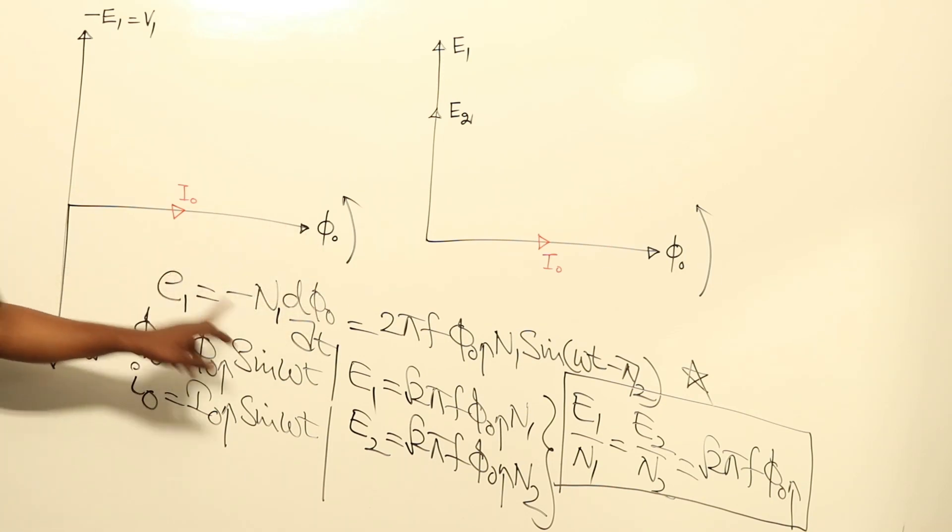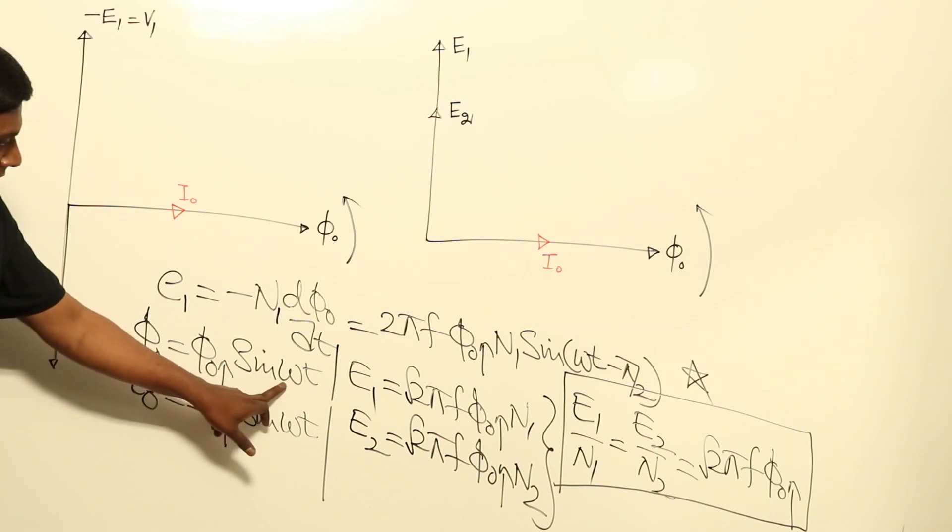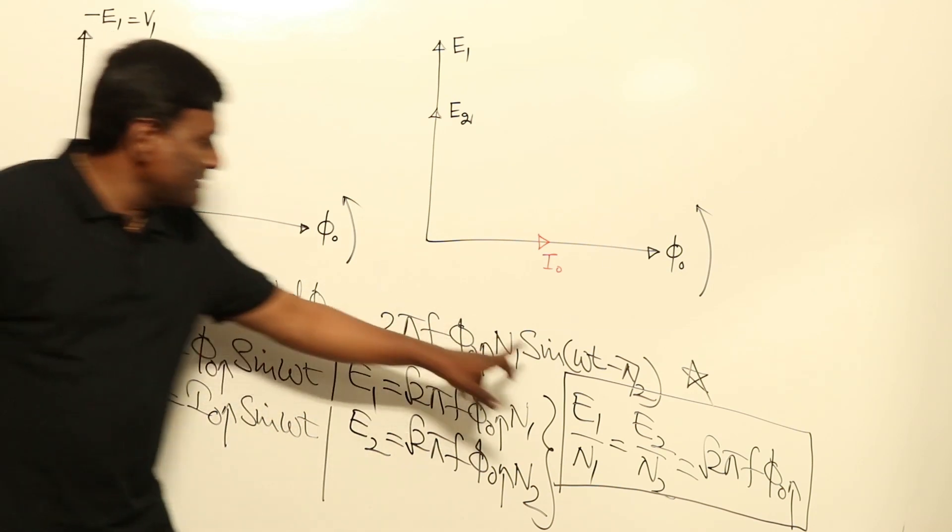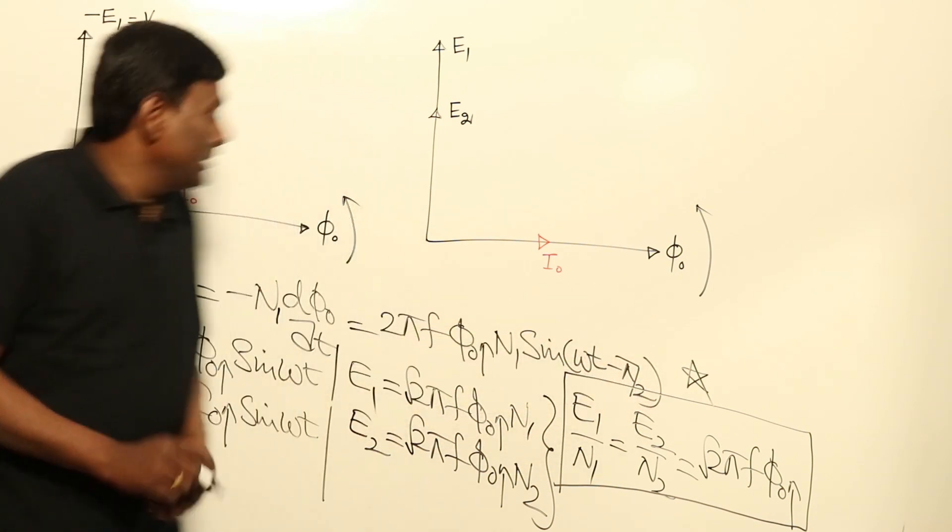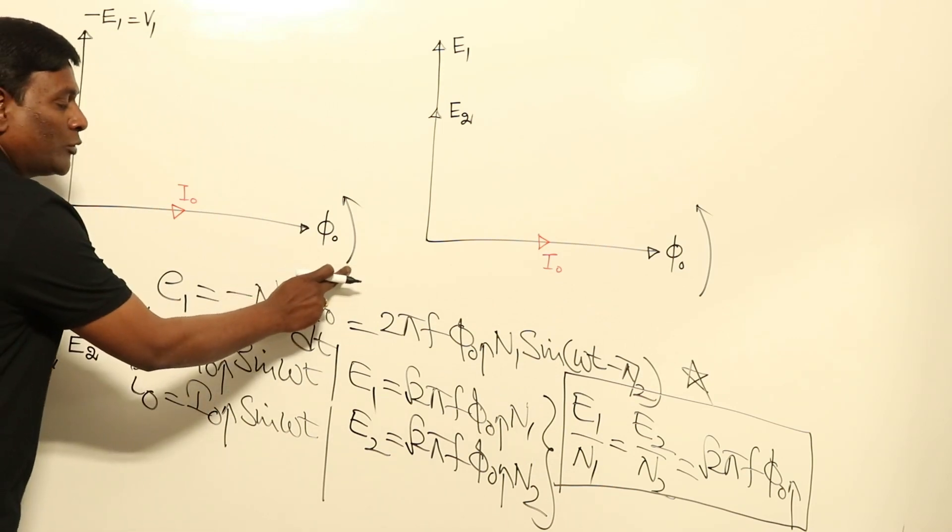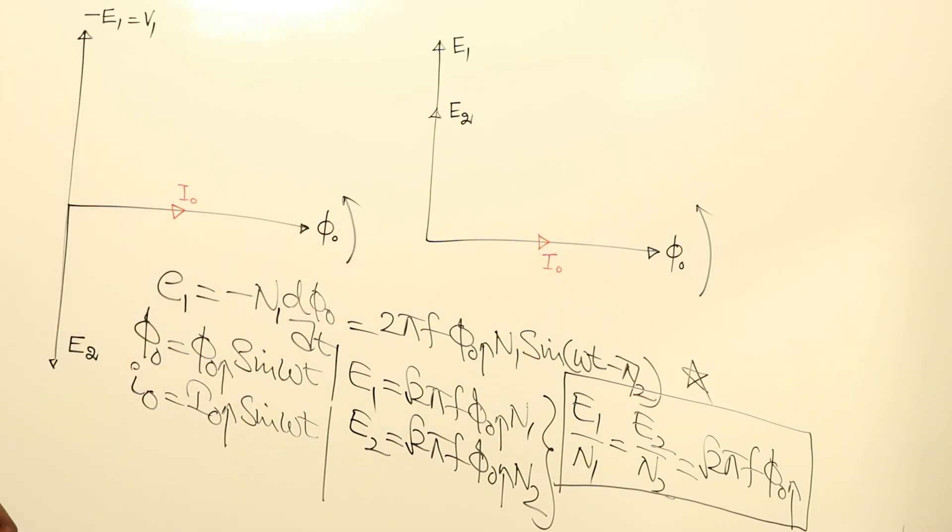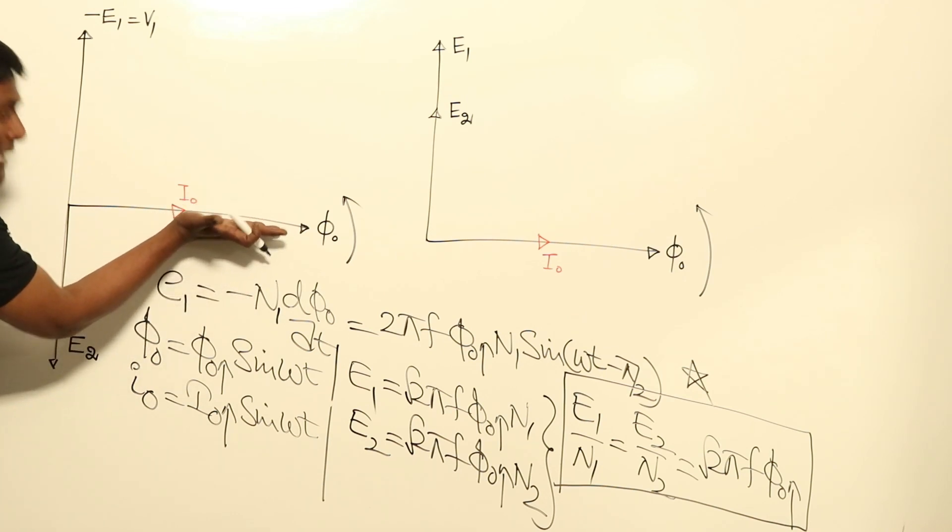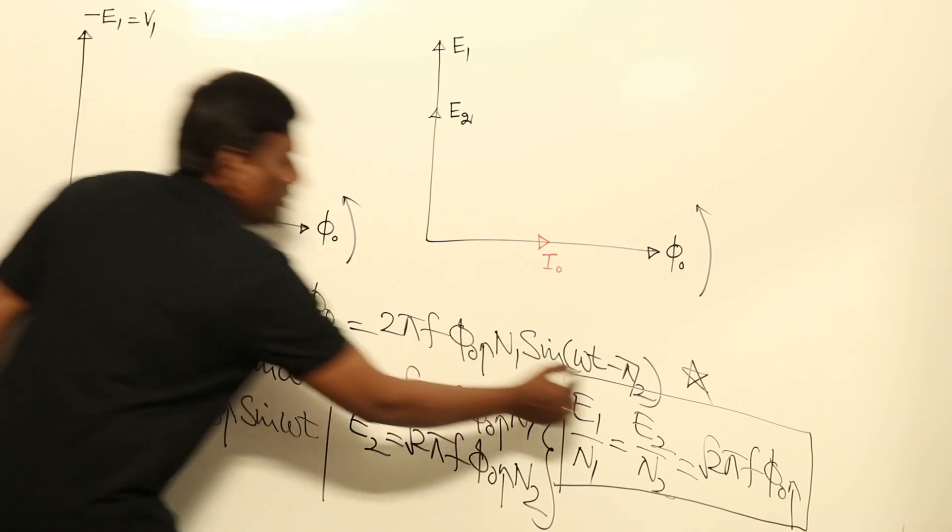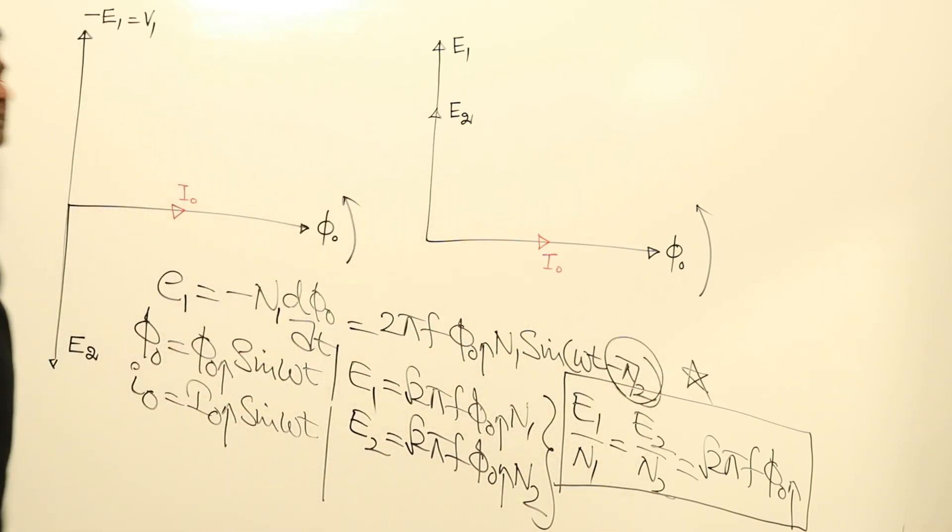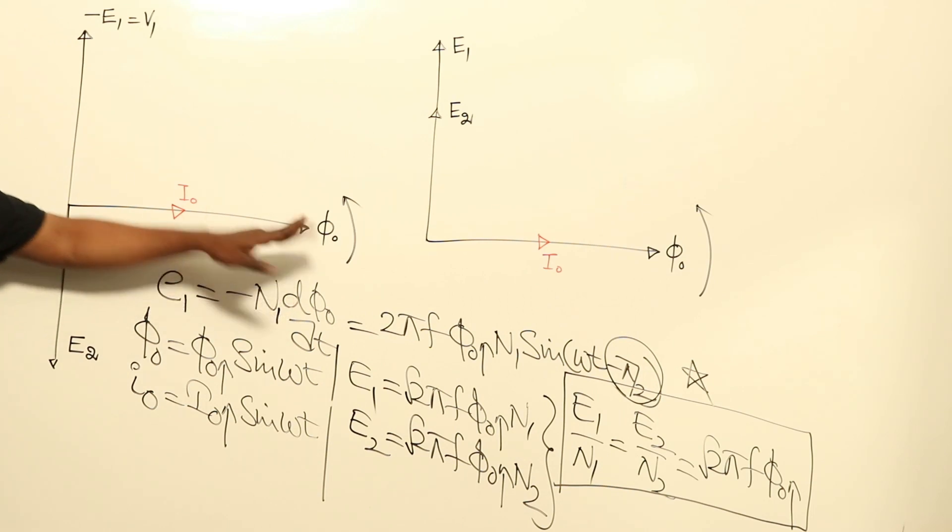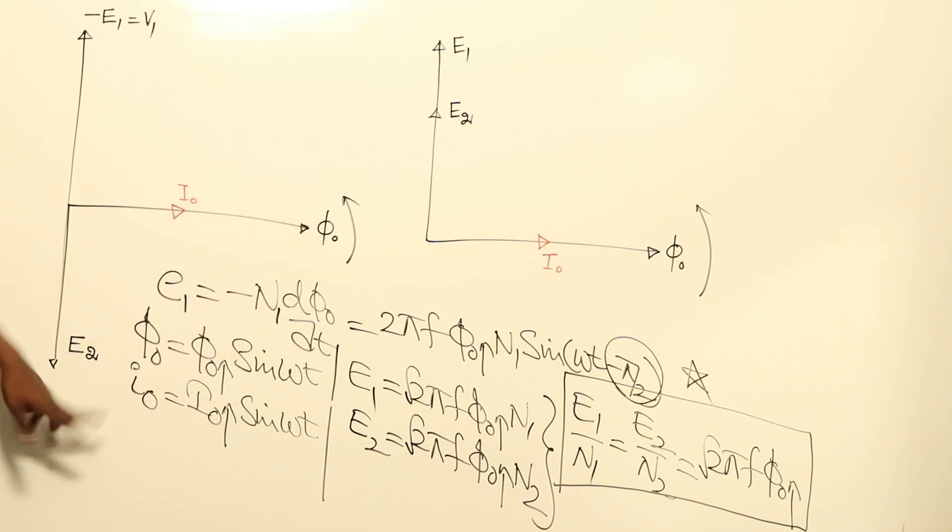My induced voltage is going to be, if Φ0 is sin ωt, E1 is going to be sin(ωt - π/2). That means if phasor order of rotation is in anticlockwise direction, Φ0 and I0 are in line. So if you go in the same anticlockwise direction, it will become plus π/2. If you go in opposite direction, I0 and Φ0 are here, so if you go in opposite direction, this is going to give you E2.